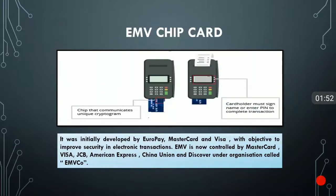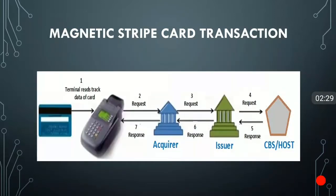Coming to the next slide, it is about the EMV chip card. Here the POS device is there and the card is inserted into it, so there is communication between the card and the terminal. EMV was initially developed by Europay, MasterCard, and Visa with a clear objective to provide security in electronic transactions. It is now equally controlled by MasterCard, Visa, JCB, American Express, China UnionPay, and Discover under a new organization called EMVCo.